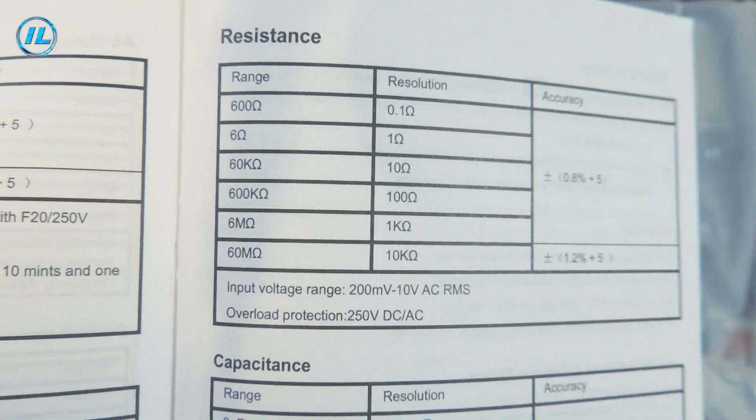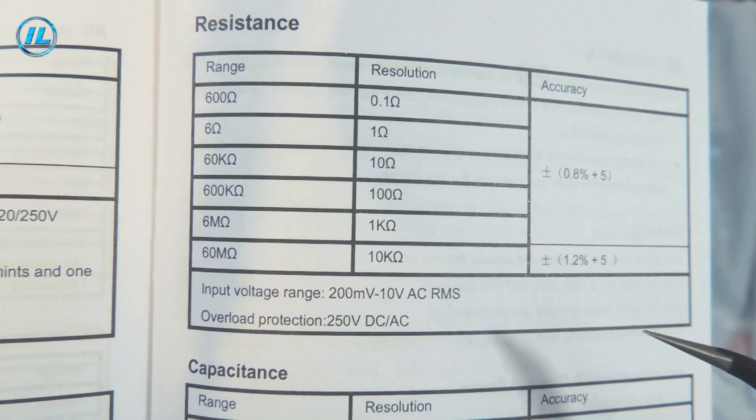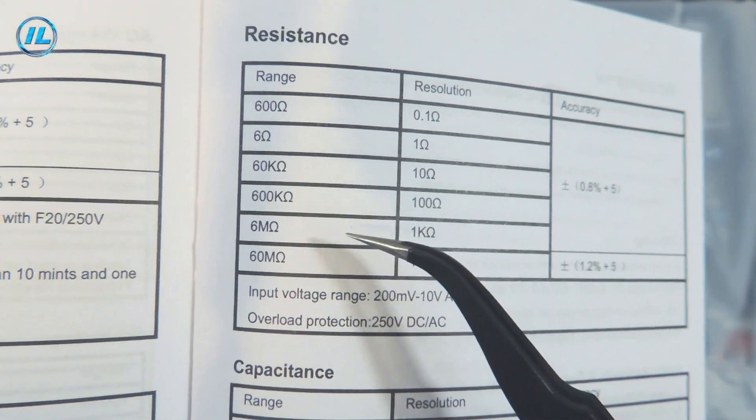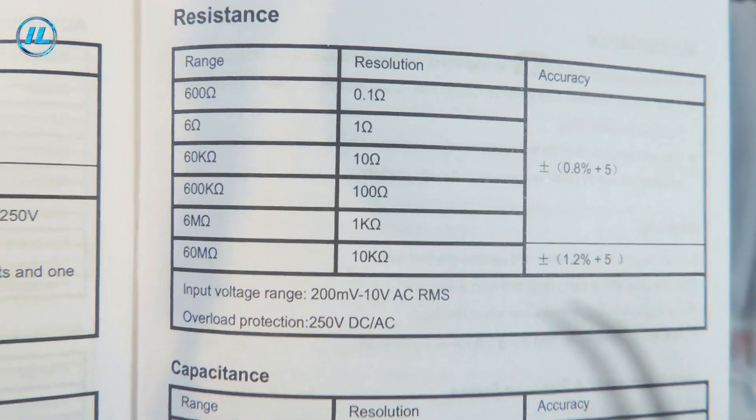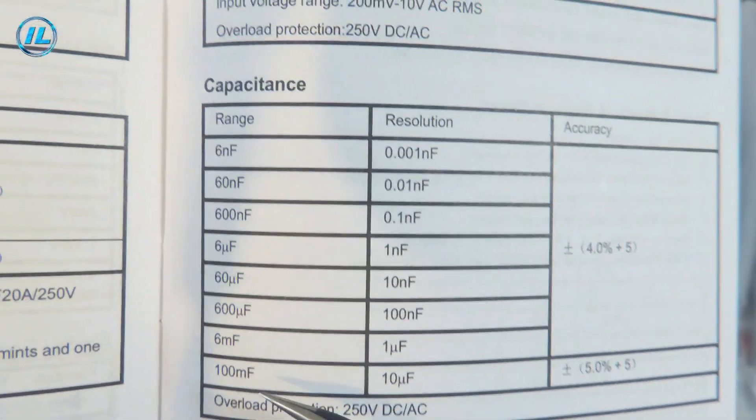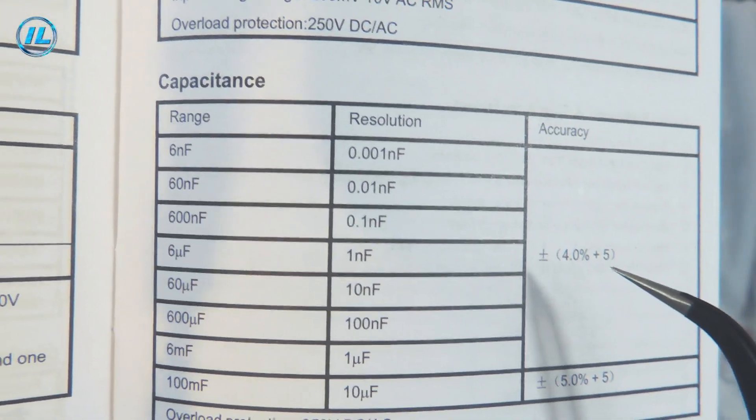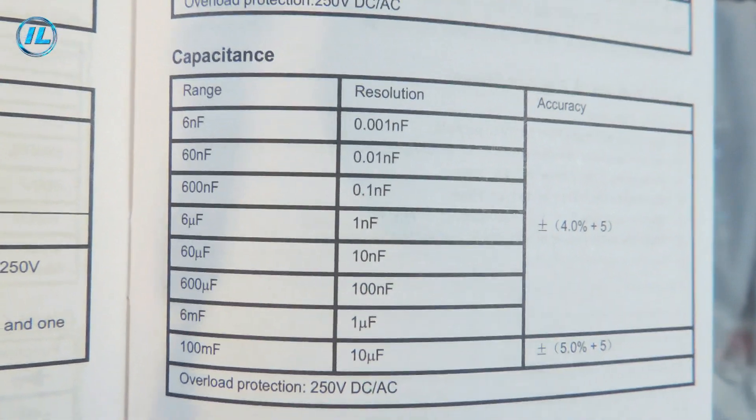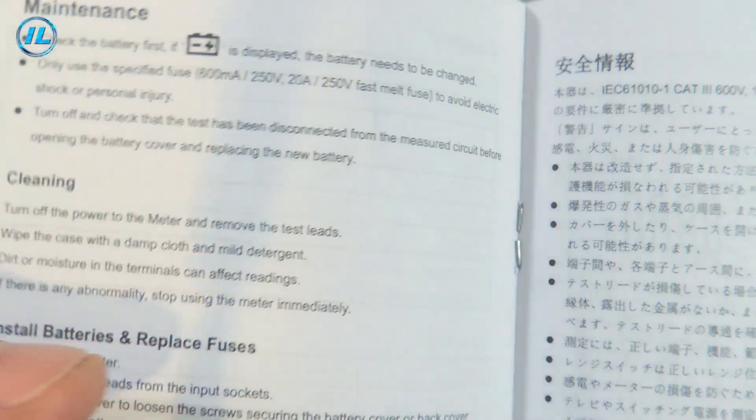Resistance measurement is up to 60 megohms. The error is 1.2 percent. In the main range up to 6 megohms the error is 0.8 percent. In measuring the capacity of up to 100,000 microfarads or up to 100 millifarads, the margin of error in the main range is 4 percent. Well, this multimeter has excellent characteristics and it will be very comfortable to work with it.